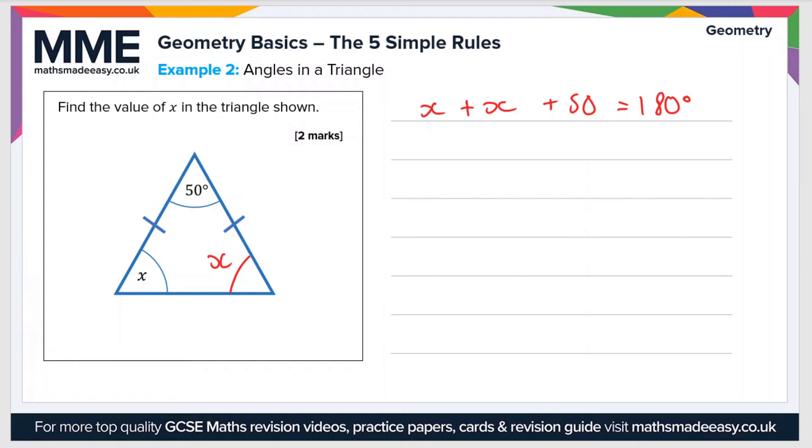So let's just solve this equation for x now. So 2x plus 50 equals 180 degrees. So 2x equals 180 minus 50, which is 130. And therefore x equals 130 divided by 2, which equals 65 degrees. So x equals 65 degrees.